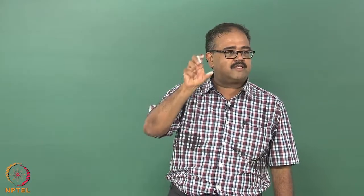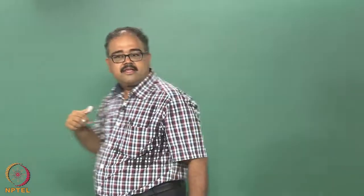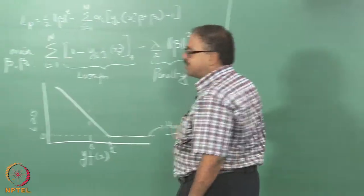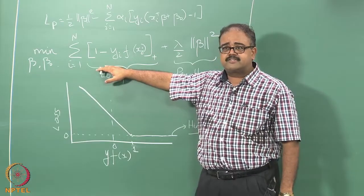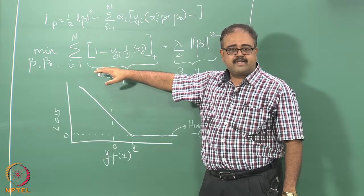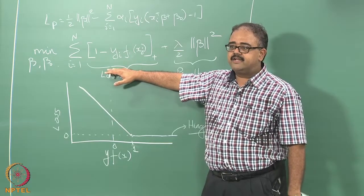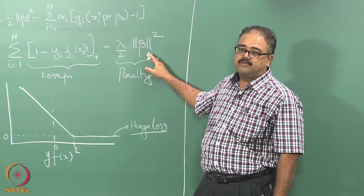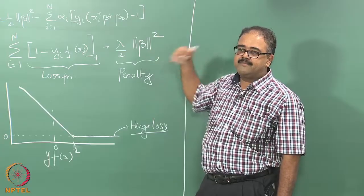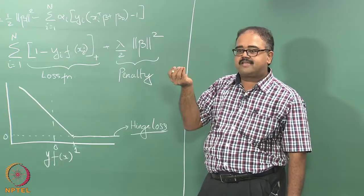In effect, the constraints are an important part of what you are optimizing — it is not just the distance from the hyperplane that matters, but also that points should be on the right side of the hyperplane. Putting it as a hinge loss makes that explicit: the loss function captures correctness, while the penalty term ensures a small-norm solution — just like ridge regression.